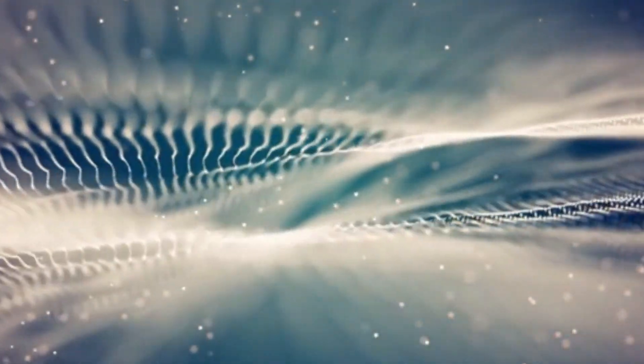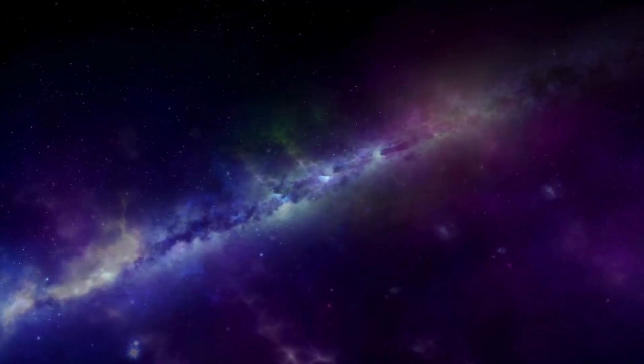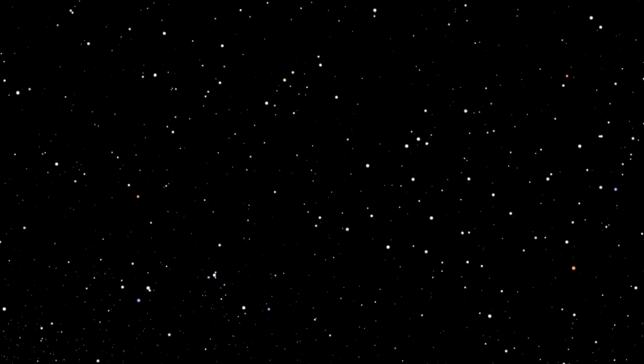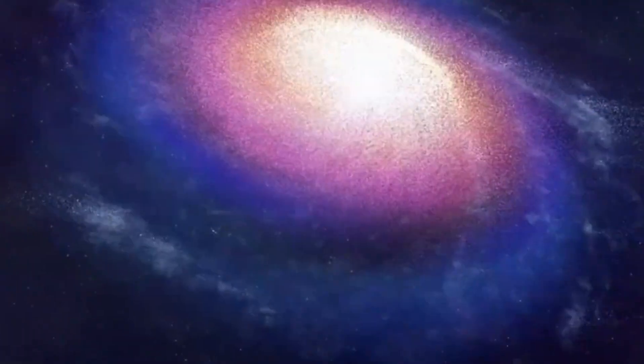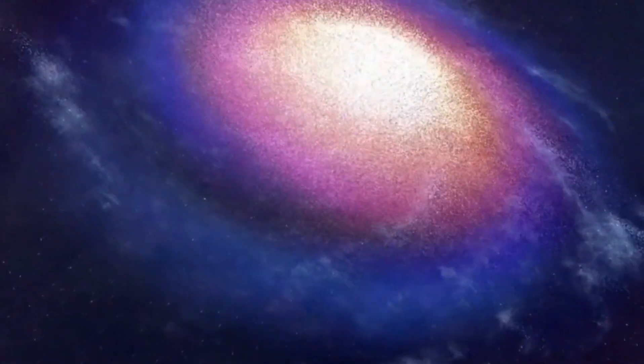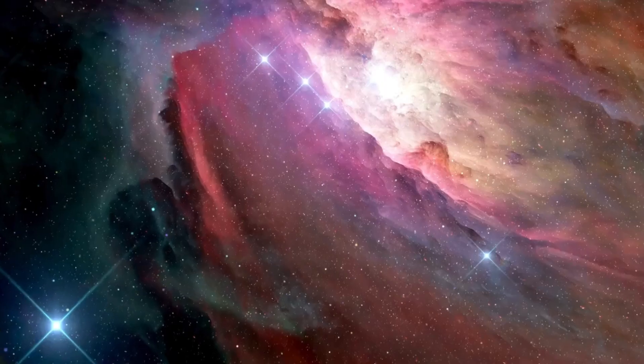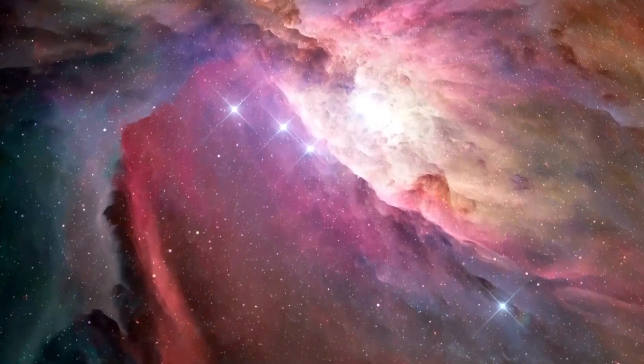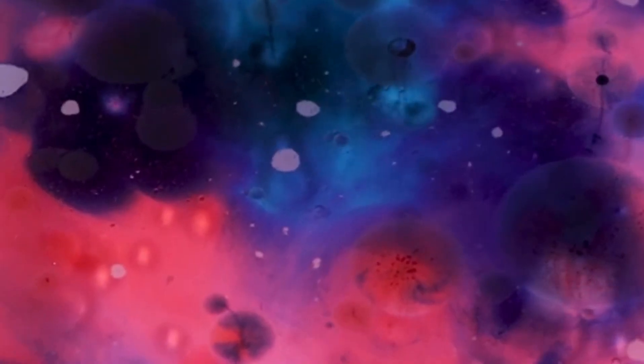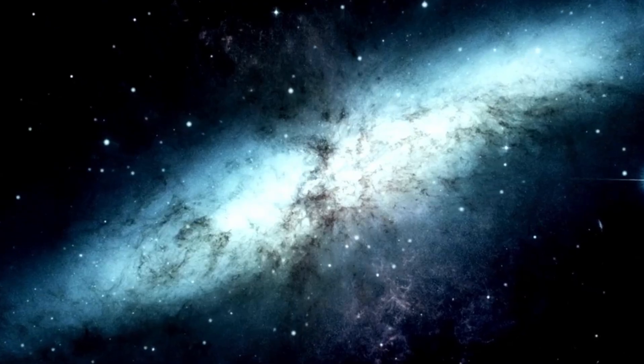According to current estimates, alum spans an astonishing 16 million light years across, dwarfing our own Milky Way galaxy by a staggering margin. To put this into perspective, the Milky Way measures approximately 100,000 light years in diameter, making alum roughly 100 times larger in size. Such a monumental scale is difficult to comprehend, underscoring the vastness and complexity of the universe in which we reside. The sheer size of alum not only challenges our understanding of galactic dimensions but also raises intriguing questions about its origins and evolution. How did such a colossal structure come into existence and what forces have shaped its development over billions of years? These are among the many mysteries that astronomers are eager to unravel as they continue to study alum and other cosmic phenomena.